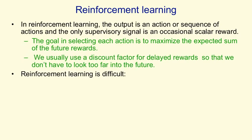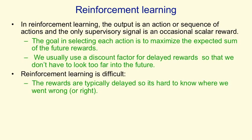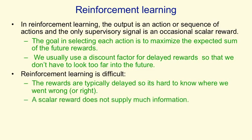Reinforcement learning is difficult. It's difficult because the rewards are typically delayed, so it's hard to know exactly which action was the wrong one in a long sequence of actions. It's also difficult because a scalar reward, especially one that only occurs occasionally, does not supply much information on which to base the changes in parameters. Typically, you can't learn millions of parameters using reinforcement learning, whereas in supervised and unsupervised learning you can — in reinforcement learning you're typically trying to learn dozens or maybe a thousand parameters, but not millions.